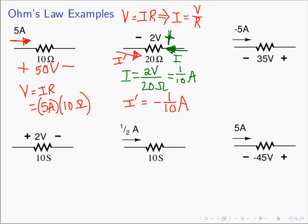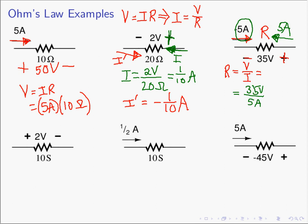In the next example, we are given a voltage of 35 volts (plus to minus) and a current of negative 5 amperes flowing in one direction. The question is: what is the resistance? The passive sign convention requires the current to be directed into the positive terminal, so we redraw with the current as 5 amperes in the appropriate direction. Rearranging Ohm's Law, R equals V over I, giving 35 volts divided by 5 amps, so the resistance is 7 ohms.